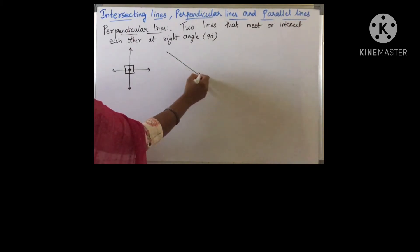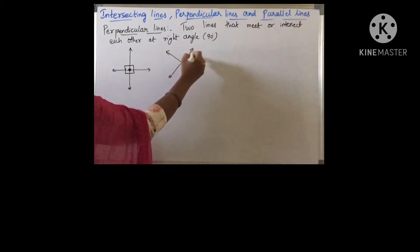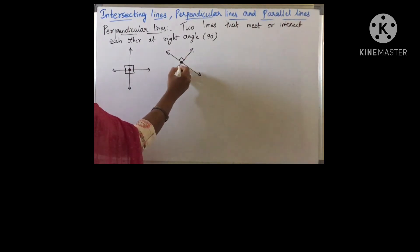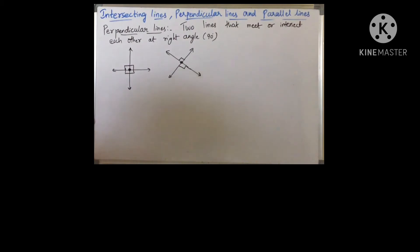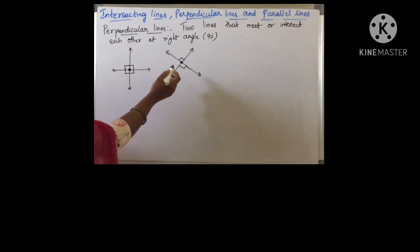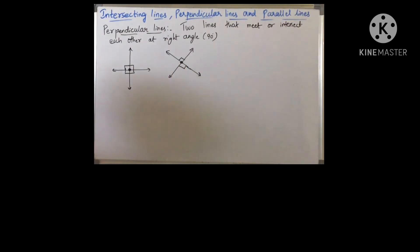Suppose the lines intersect like this — this is one line and this is one line. This is a point of intersection. If the angle is 90 degrees, then we call them perpendicular lines. The two lines that intersect at a point where a right angle is formed are called perpendicular lines.